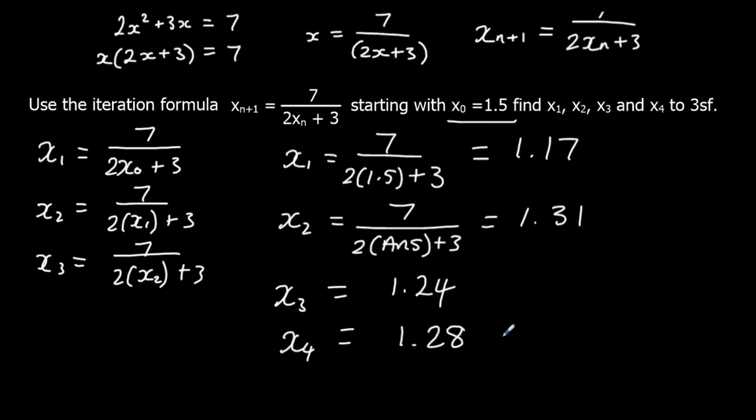And you could keep on pressing equals and getting increasingly accurate answers until it gets so accurate that the calculator won't be able to give you any more accuracy. So if you keep pressing equals, you'd end up with 1.265564437. And then the calculator won't give you any more accuracy than that, and that will be your answer for the root.